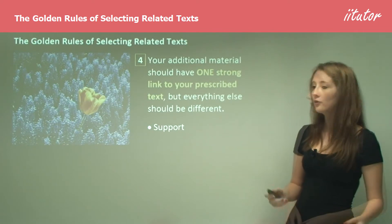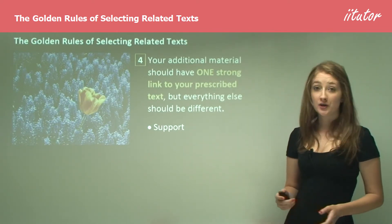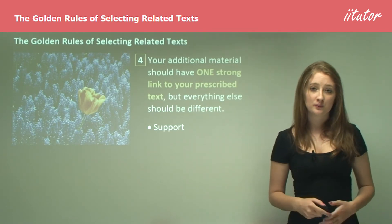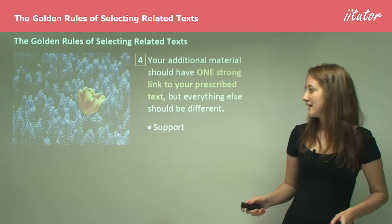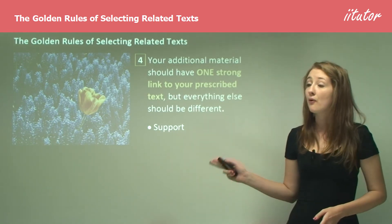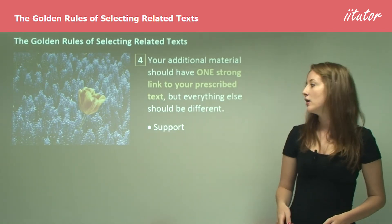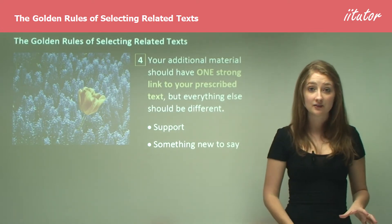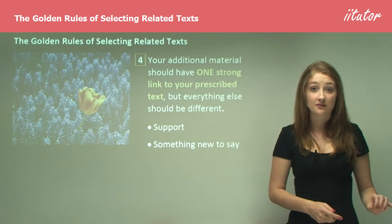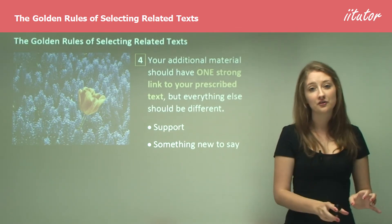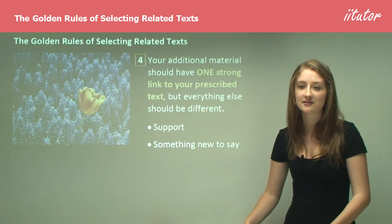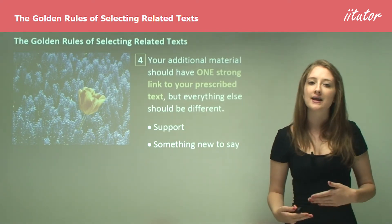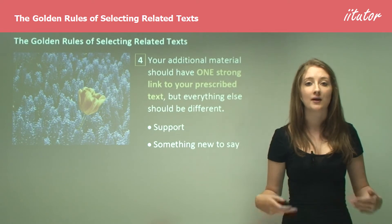The fourth rule is that your additional material should have one strong link to your prescribed text, but everything else should be different. This means that your related text not only supports your set text but also has something new to say. You continually use links such as 'text A discusses this, text B also discusses this as well as this next idea,' which really helps you provide a structure and a flow-on essay style.